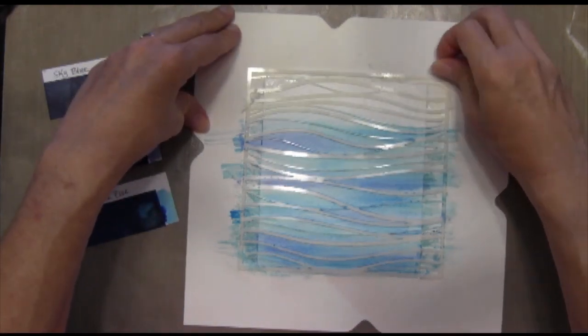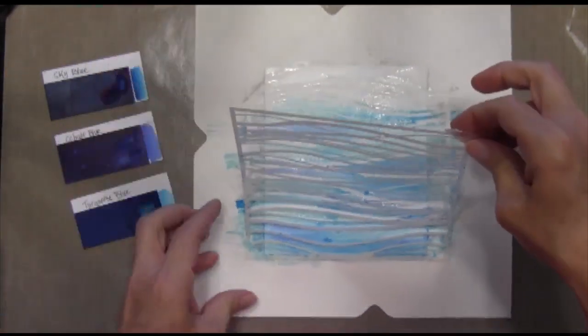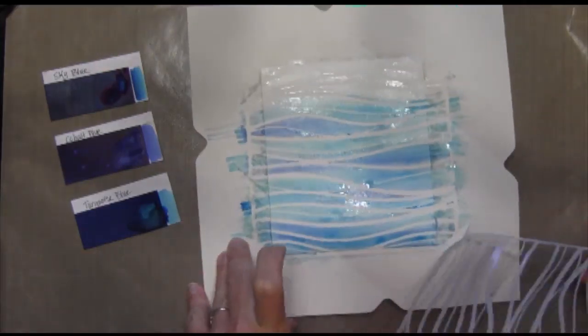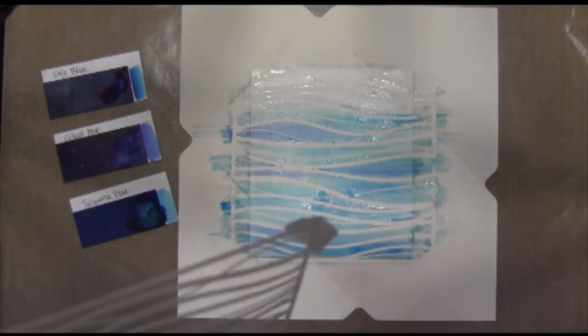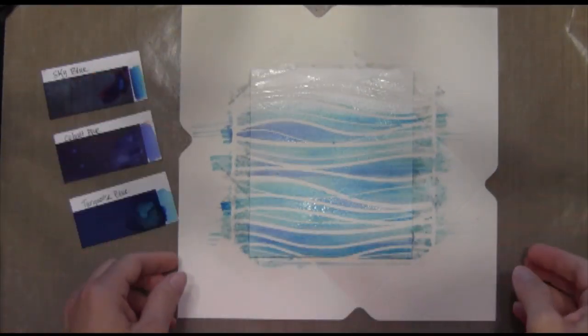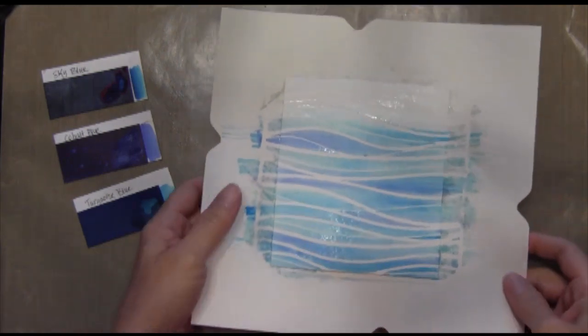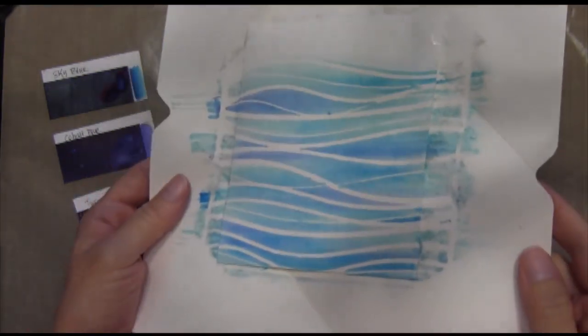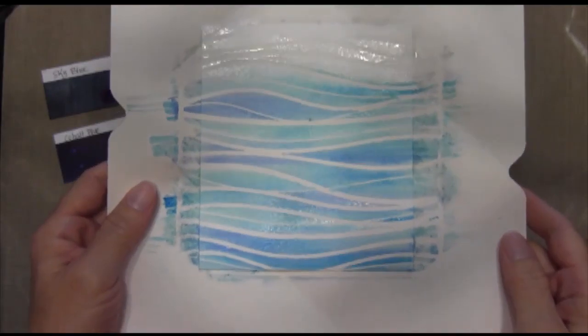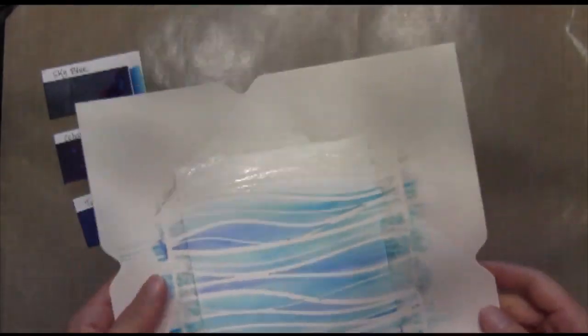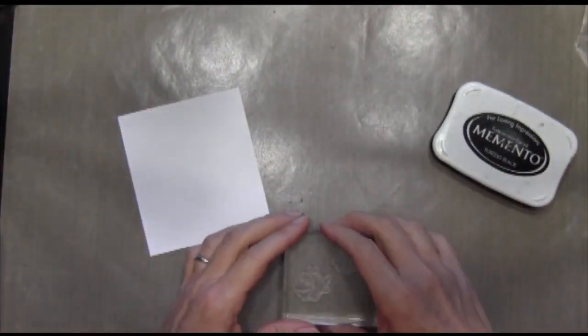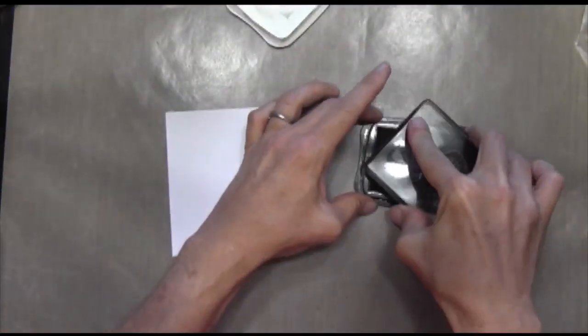So now I'm going to remove my stencil and you can see how pretty it is. And then it really kept those areas white. Now I immediately went and washed that stencil and then I'm going to take my cardstock. It's really amazing how the water really didn't run underneath the stencil there. And put that off to the side to dry.